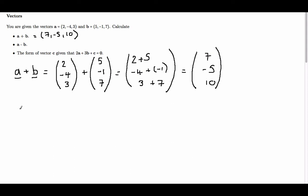Now let's look at a minus b. So we have a minus b. Now a is 2, minus 4, 3, and we take away from it b, which is 5, minus 1, 7.